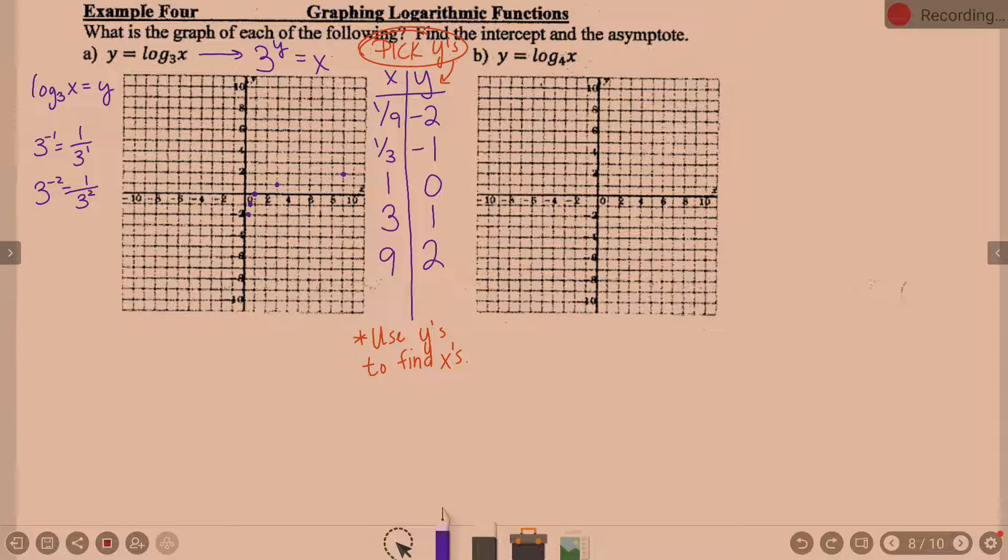Keep in mind, the exponential function and the log function are inverses. We talked about that yesterday. This is the inverse of an exponential function. Difference is, our graph is never going to cross the y-axis. It runs along, gets closer and closer. And it is going to go up and to the right.